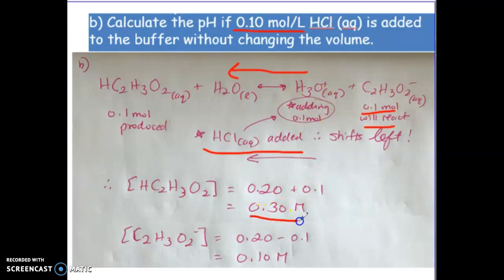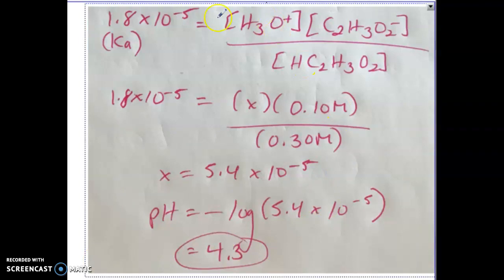So the new concentrations in equilibrium are going to be the original 0.2 plus the 0.1 that's been produced. Our acetate ions is going to be 0.2 minus the 0.1 that is going to have to react with this 0.1 of hydronium that's been added in. And from this point on, you're essentially now solving for the exact same thing except with the new equilibrium values.